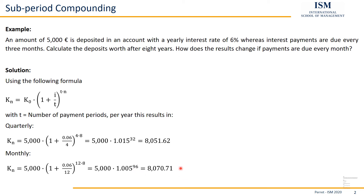If we calculate the result, we get 8,070.71. So our final result increases, and that's always the case. If we increase the number of sub-periods — if we increase t — our end result will always increase. However, we won't get an infinite amount by making sub-periods smaller and smaller, because while results keep increasing, they get closer and closer to a specific limit value.